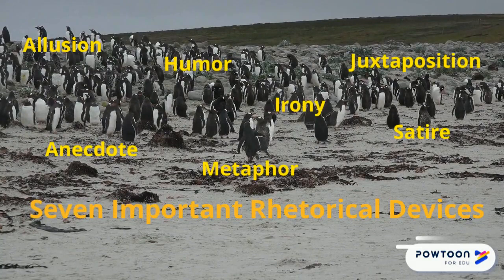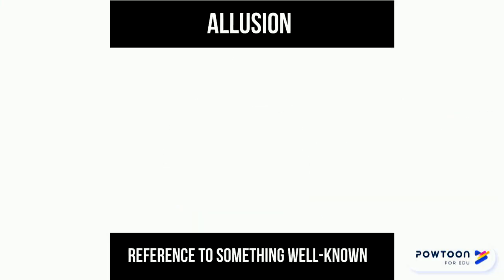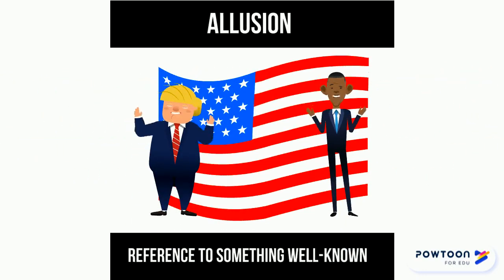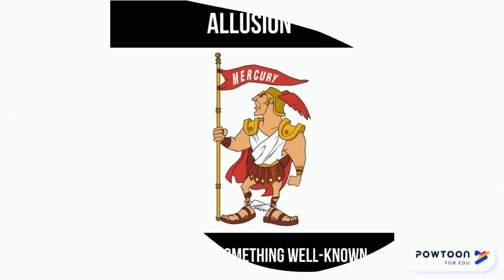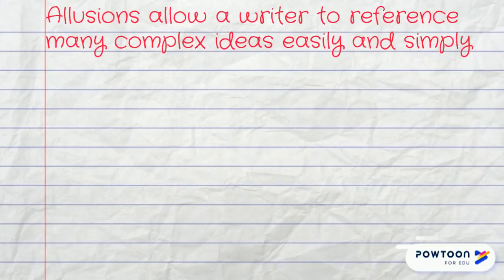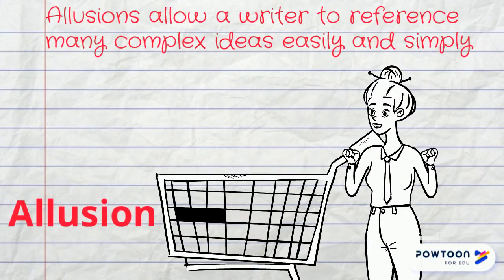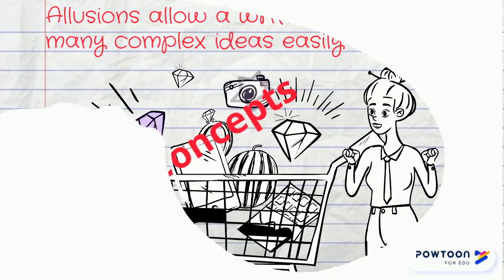Let's start with allusion. An allusion is a reference to something well-known. It could be cultural, political or historical, mythological, or anything well-known. But why do we use allusions? Allusions allow a writer to reference many complex ideas easily and simply. Therefore, a speaker can access complex ideas already present in the audience's mind.